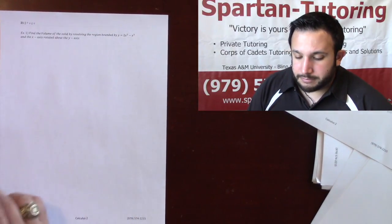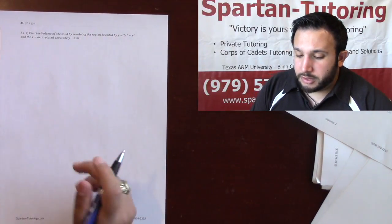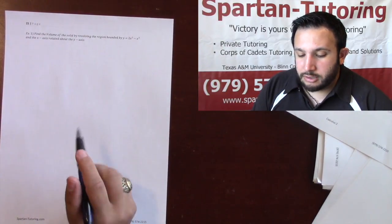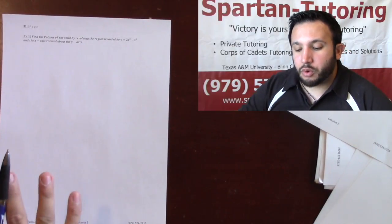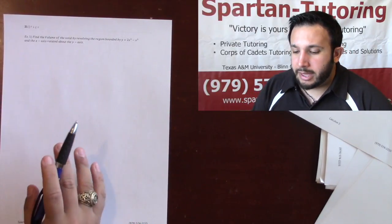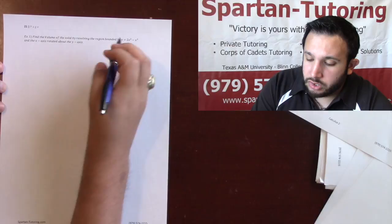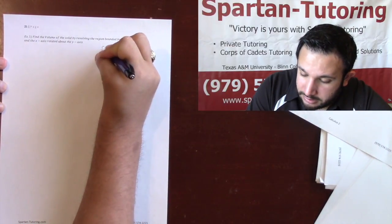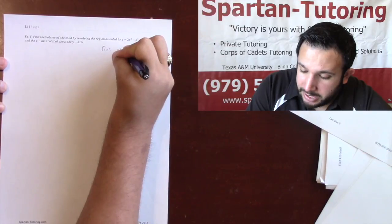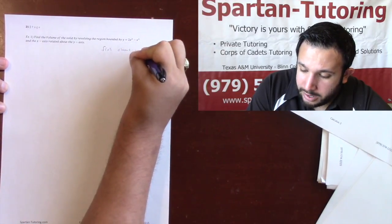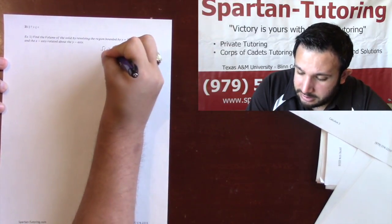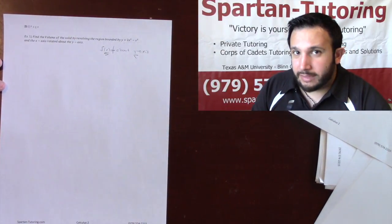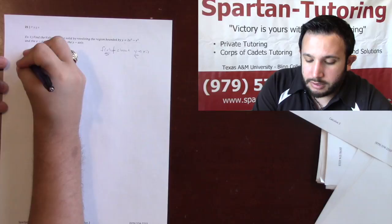For number one: find the volume of the solid by revolving the region bounded by y = 2x² - x³ and the x-axis, rotated about the y-axis. What you have is a function of x rotated about the y-axis — these do not match, x's and y's — and because of that, I know I'm using cylindrical shells.